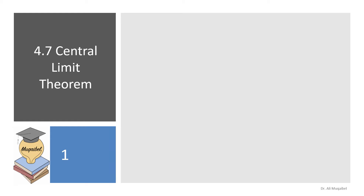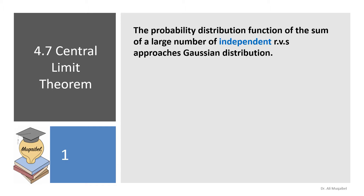Welcome to the Central Limit Theorem, a very important theorem. It states that the probability distribution function of the sum of a large number of independent random variables approaches a Gaussian distribution. They have to be independent random variables, and the sum approaches Gaussian distribution.